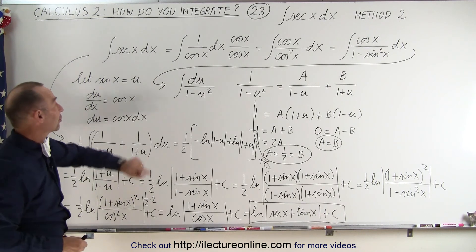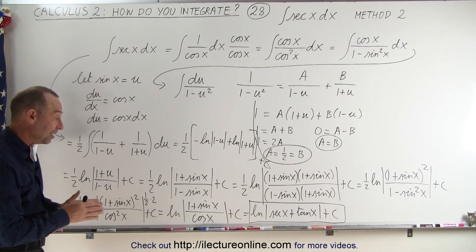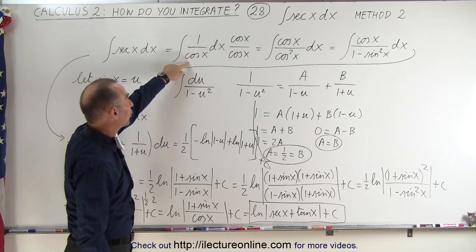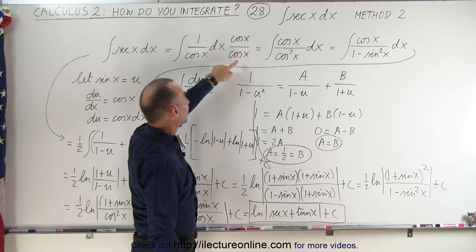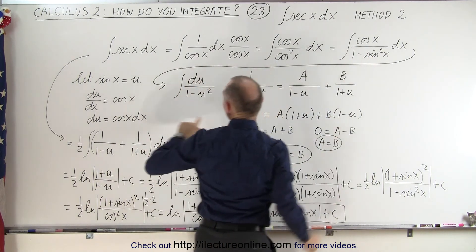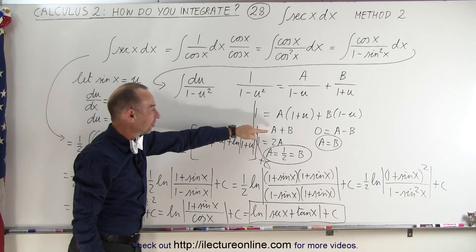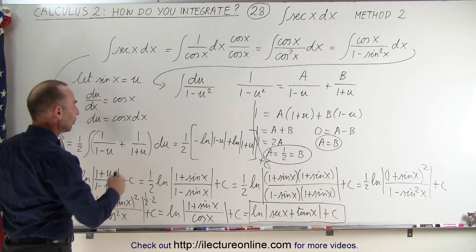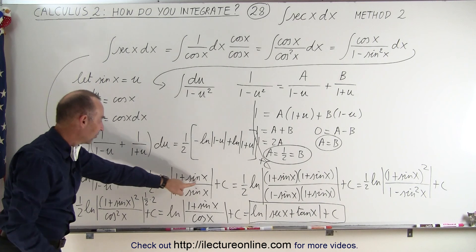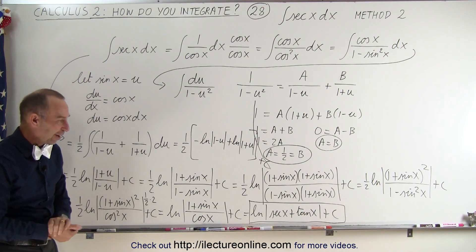This is the exact same answer we got in the previous video when we used a different trick to integrate the secant of x. It's a little more convoluted, but we still got to the same answer. What we did: first we wrote secant as 1 over cosine, multiplied numerator and denominator by cosine, wrote cosine squared as 1 minus sine squared, made the substitution u equals sine of x, used partial fractions to write it as two separate fractions, integrated those, back-substituted u equals sine of x, and with some manipulation got back to the same answer. And that's how it's done.